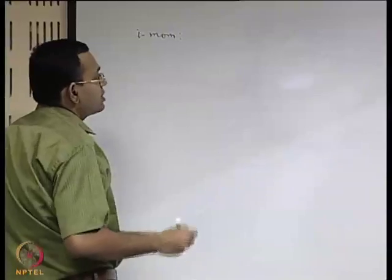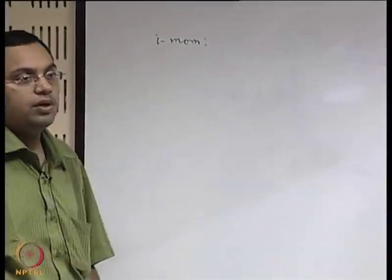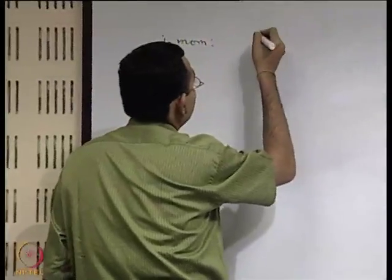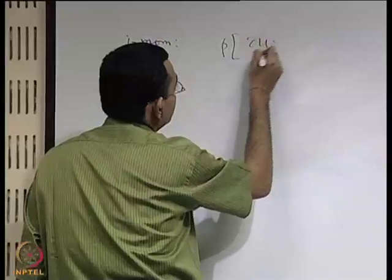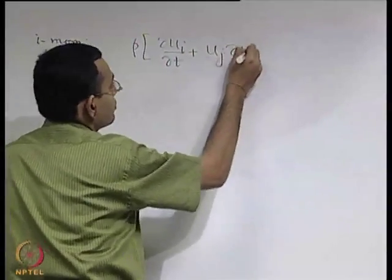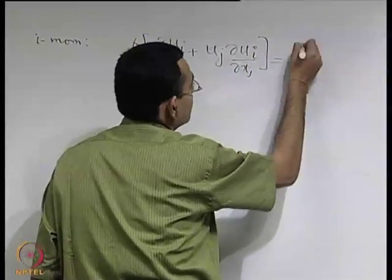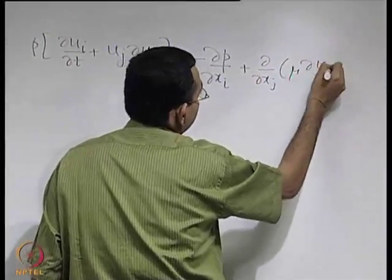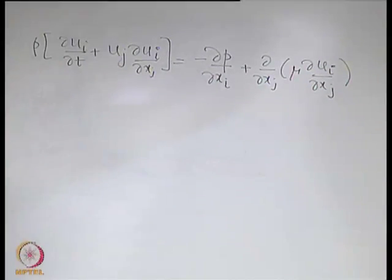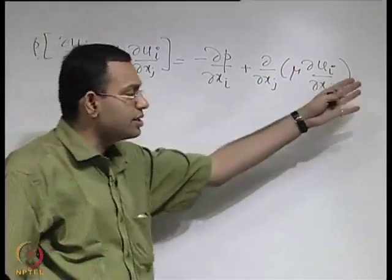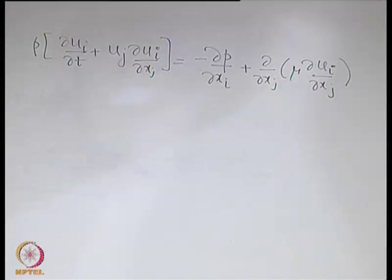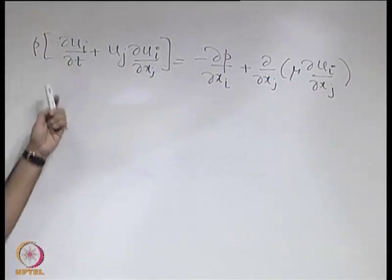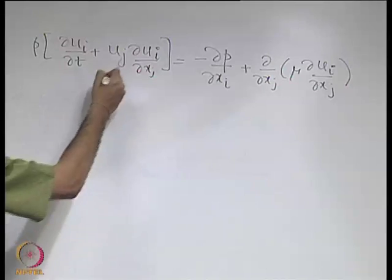Let us first write the i-momentum equation — that is the linear momentum conservation in the i-th direction. We write rho times the momentum equation. We have not written the body force, but if there is a body force, you can always add it. We will do the same thing as we did for the continuity equation: substitute each term in terms of its average plus the fluctuation.